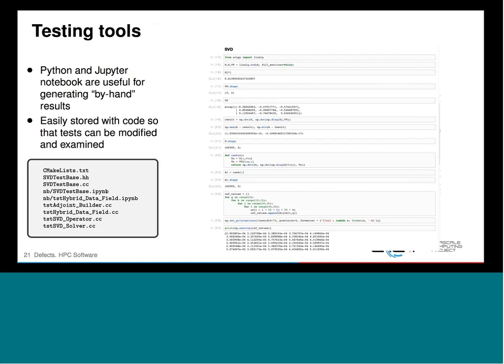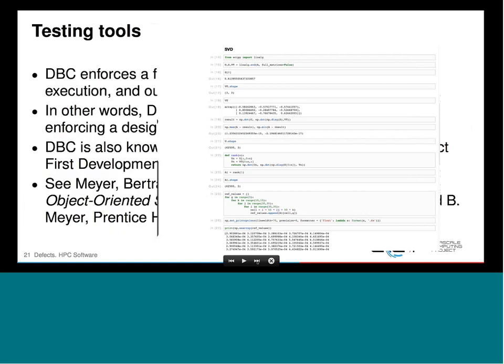Here's another part of our code running a single-value decomposition to do a least-squares separation of four-dimensional data. We put NB (notebook) directories next to our test directories to store Jupyter Notebooks. In this particular notebook, we use SciPy to actually do the SVD, and then we can test those values in our unit test. We keep these things side-by-side as part of the permanent record of the code under version control.